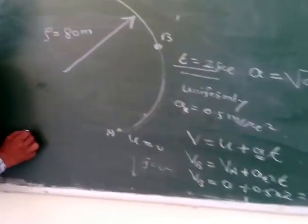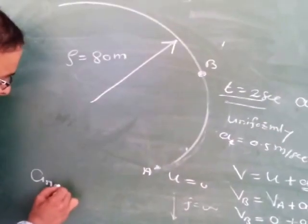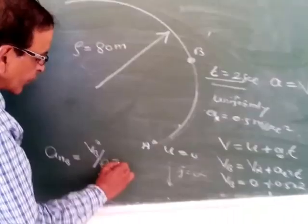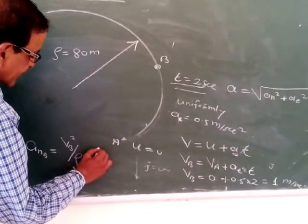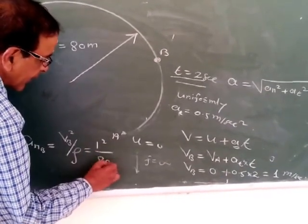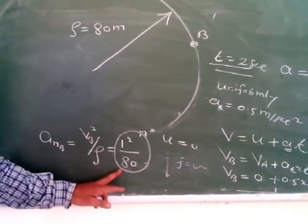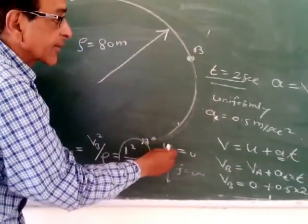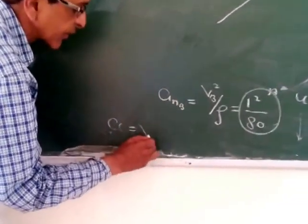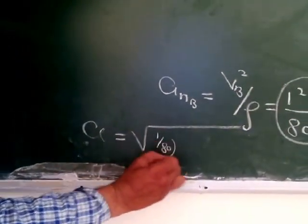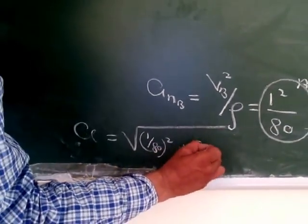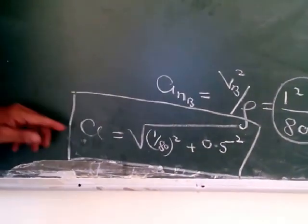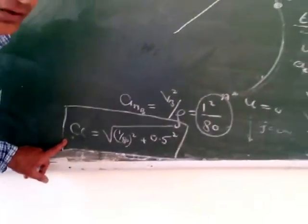Now the normal acceleration at point B is Aₙ = V_B² / ρ = 1² / 80. All points have the same constant tangential acceleration of 0.5 m/s². Therefore, the total acceleration A = √((1/80)² + (0.5)²). After calculating this, we can find the total acceleration at that point.